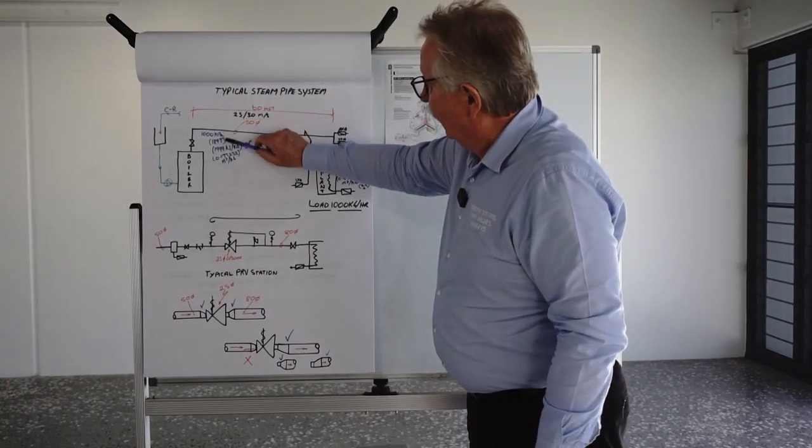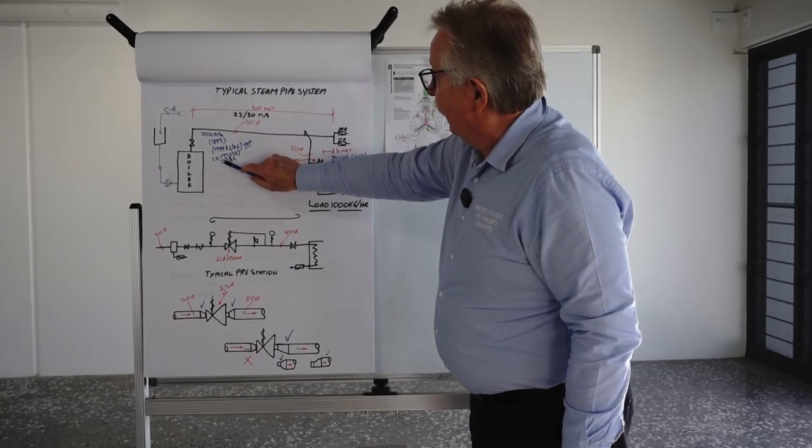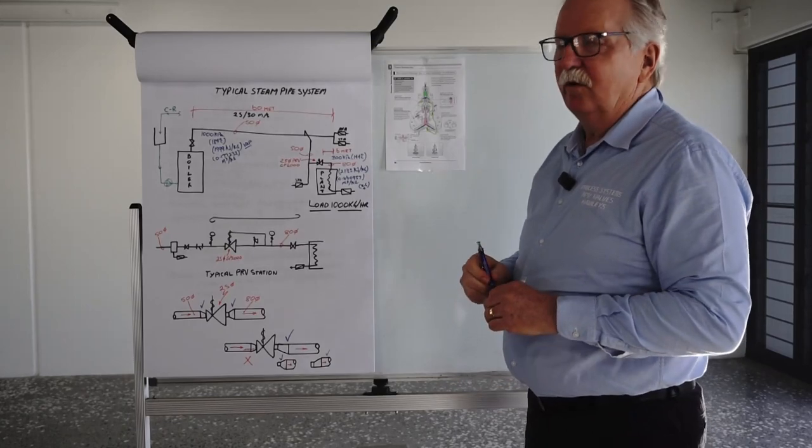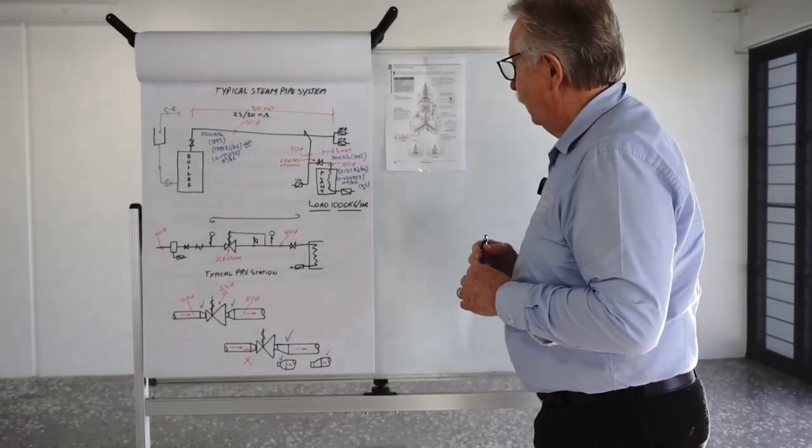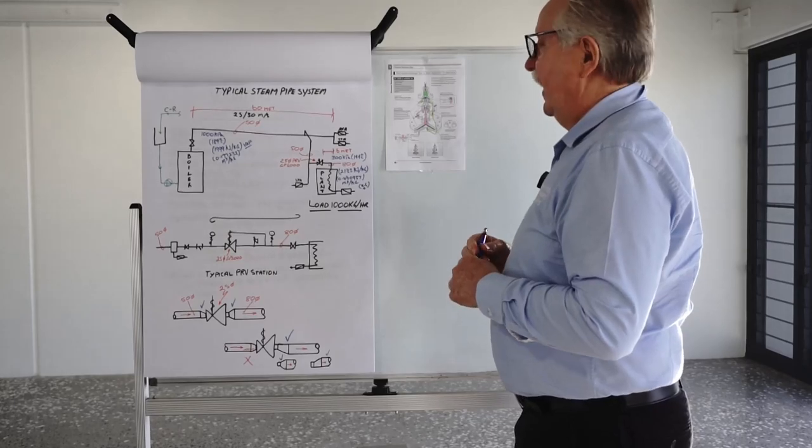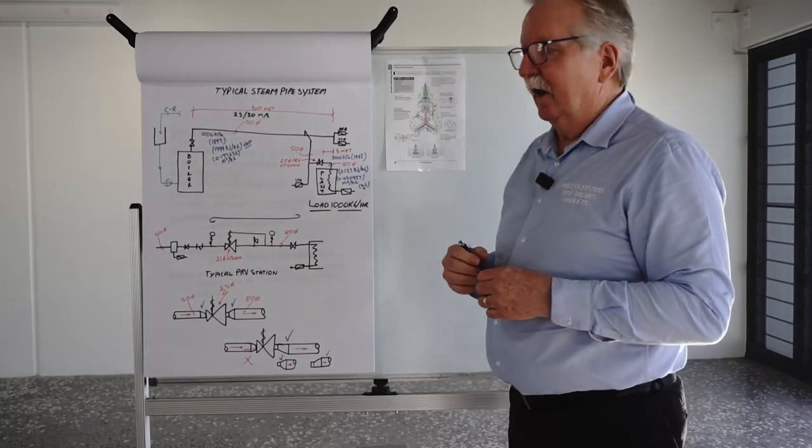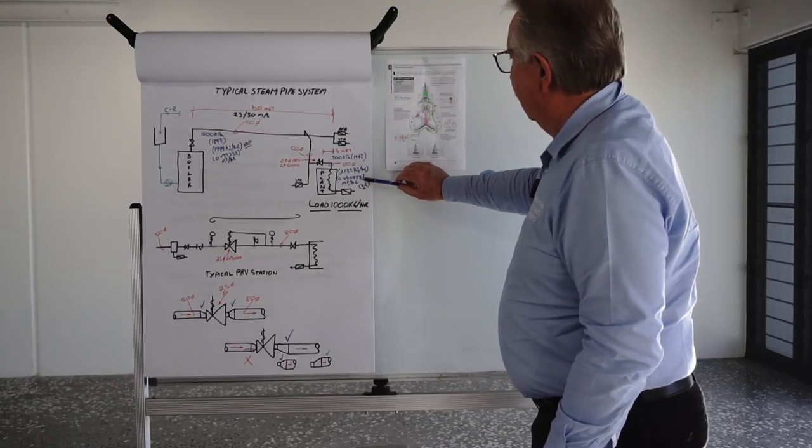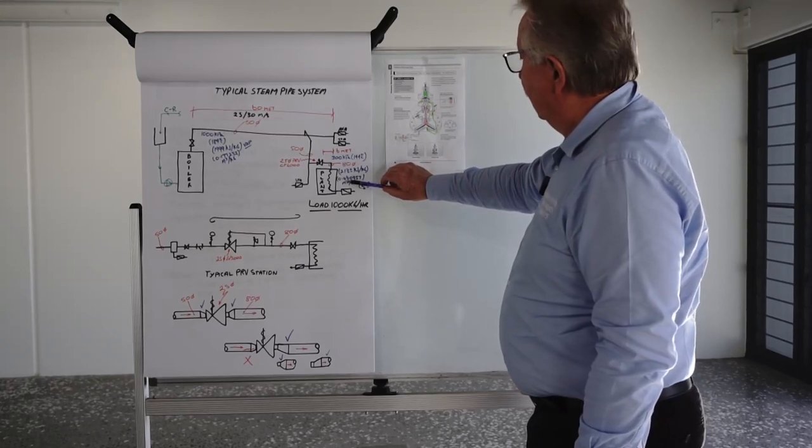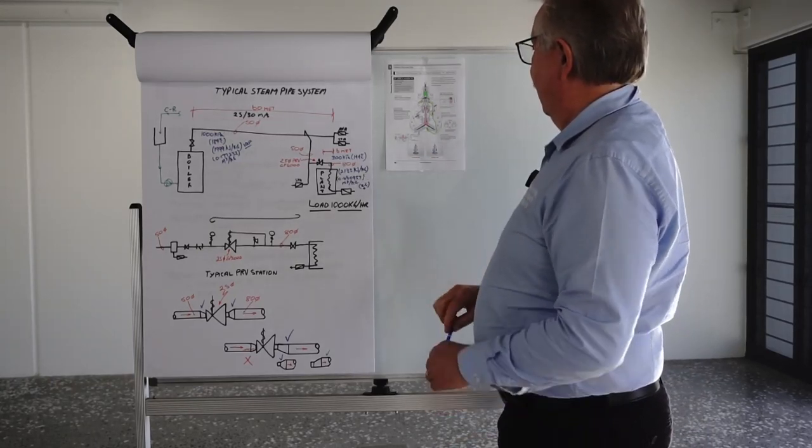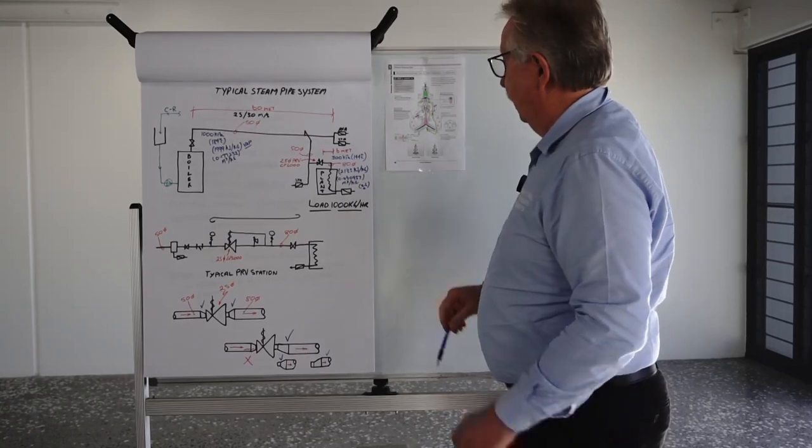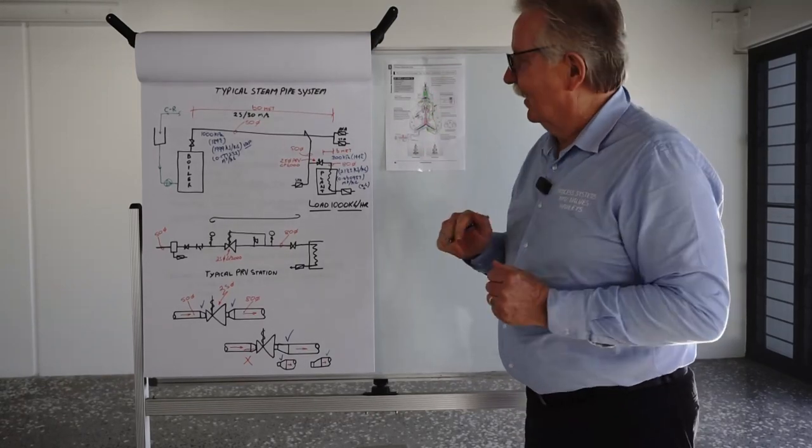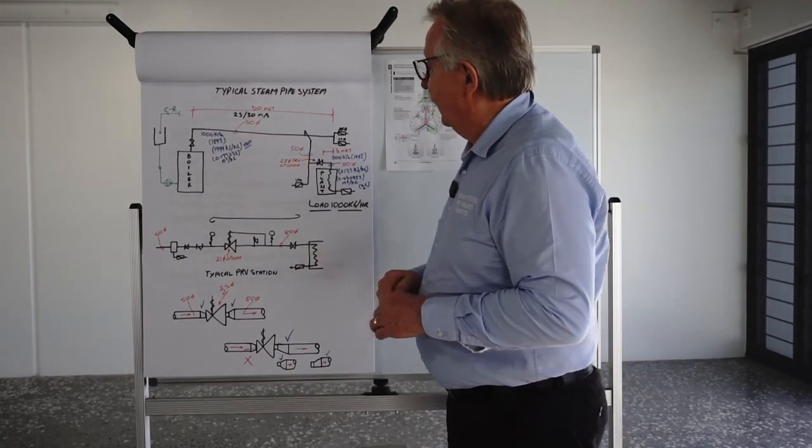In this case what we've got is a specific volume of 0.177232 cubic metres per kilogram. Again refer to the steam tables. The steam tables are a very important part of pressure reduction and identifying what you need to do and how you need to do it. If you look at the 300 kPa our specific volume is 0.460957 cubic metres per kilogram. It's almost 2.6 times bigger than the steam volume at 1000 kPa.